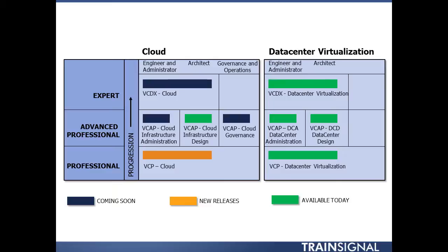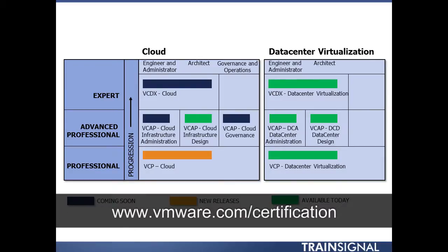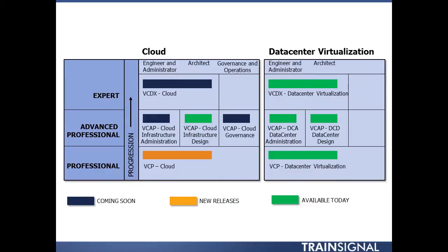Note the color coding: green certifications have been available for some time, orange ones like VCP Cloud are new releases, and others coming soon are also indicated — check the VMware certification website for current availability. This diagram also highlights how heavily VMware is moving into cloud certification. The data center virtualization track covers vSphere, vCenter, and ESXi, but the new cloud computing track actually has more certifications, including the Cloud Infrastructure Administration VCAP, Cloud Infrastructure Design VCAP, and Cloud Governance VCAP.